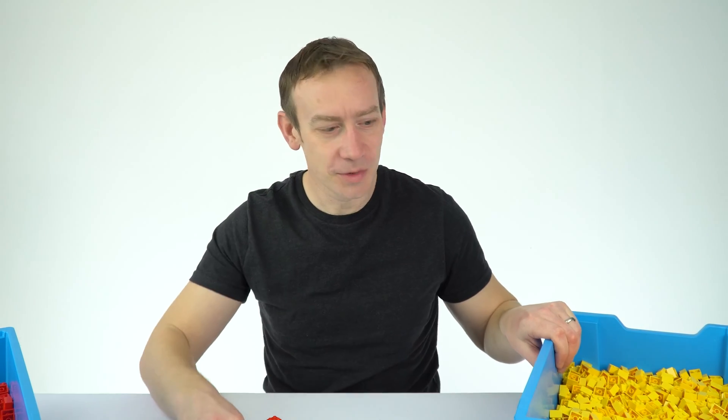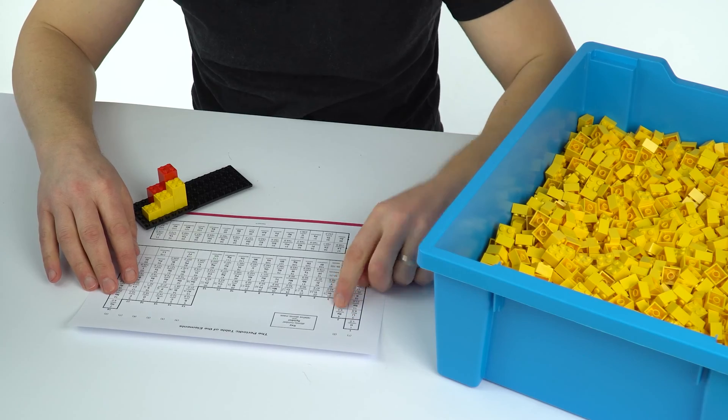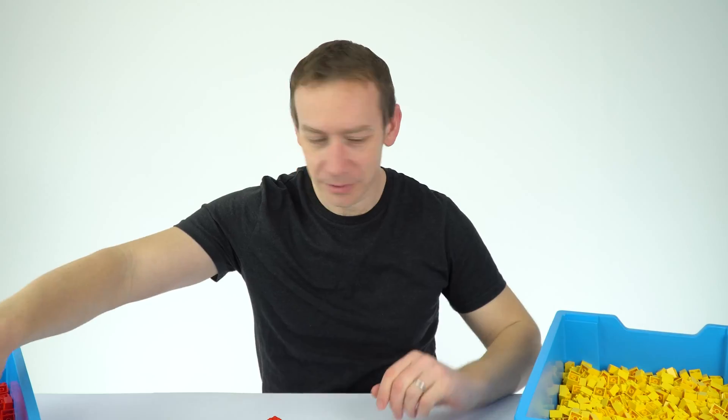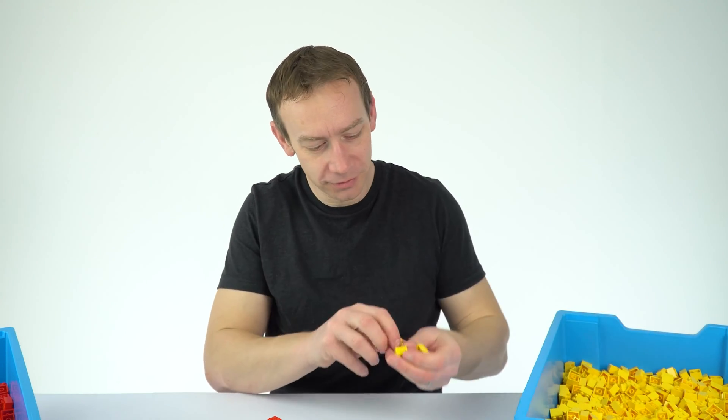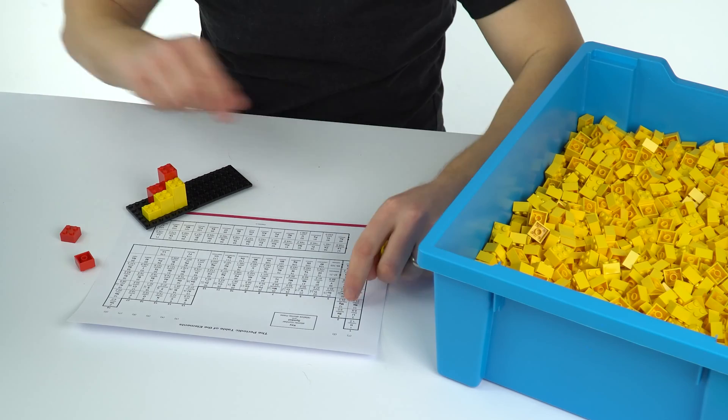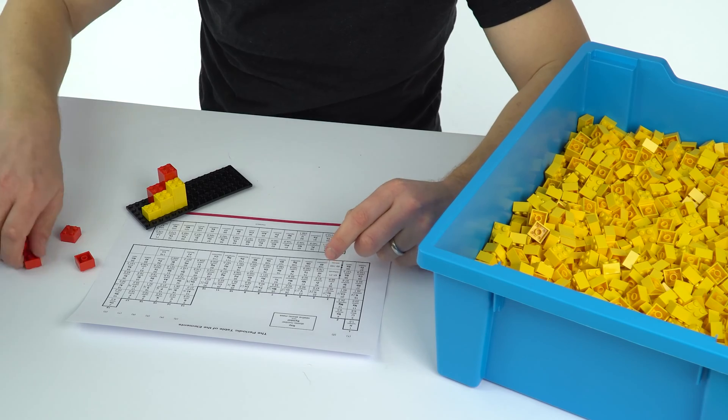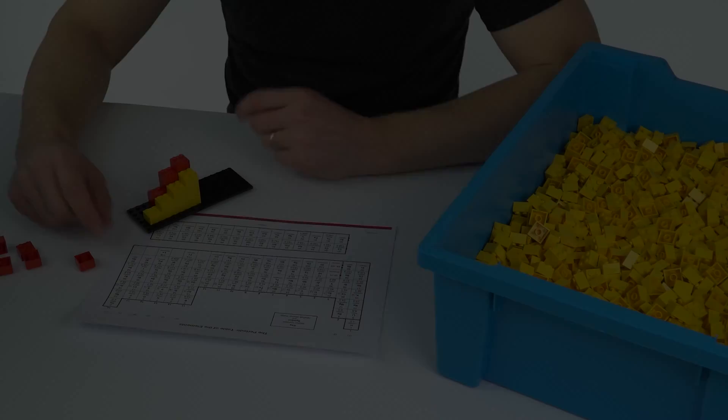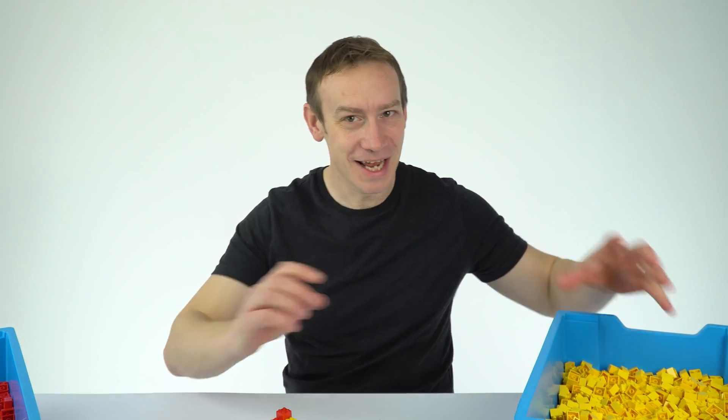So what I'm now going to do is just start to work my way through the elements. So the next one is beryllium which has four protons and it's got five neutrons. So I suspect this is going to take a while.